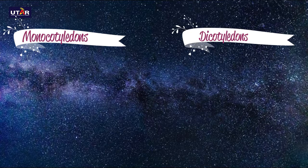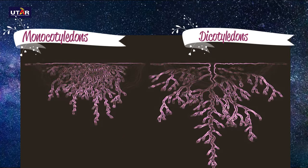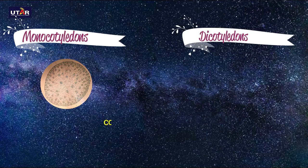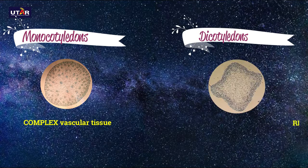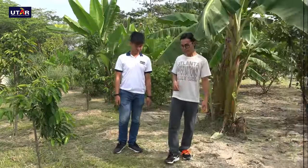Distinguishing monocots and dicots by their roots is a less easy way. But most of the time, monocots have a fibrous root system. Dicots have a taproot system. The vascular bundle of monocots has complex vascular tissue arranged in it, while dicots have a ring arrangement of vascular tissues. So, Frederick. Yes? Do you find plants interesting now? Yeah, I do. Therefore, let us start observing the plants around us from now on. Yeah, okay.